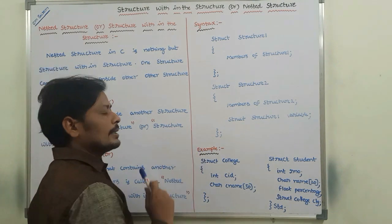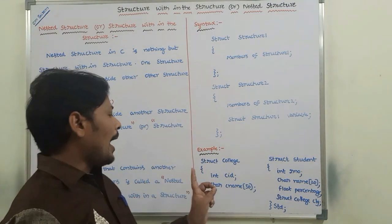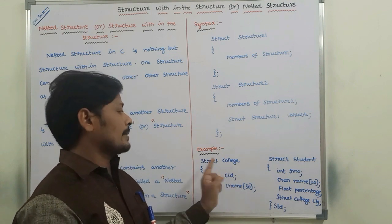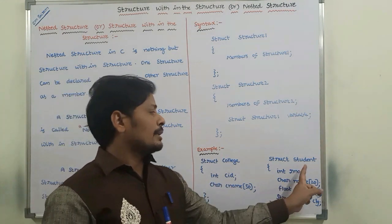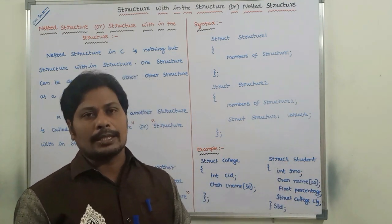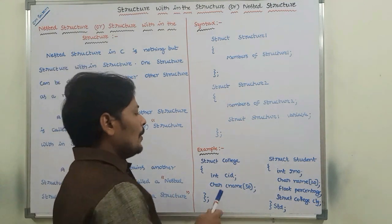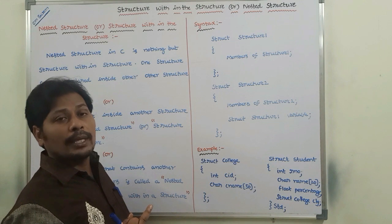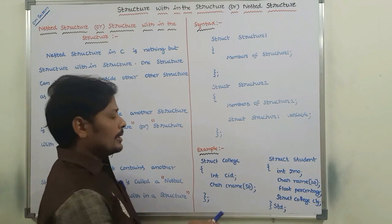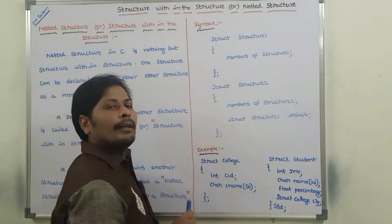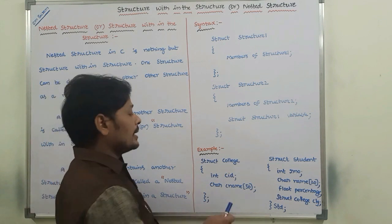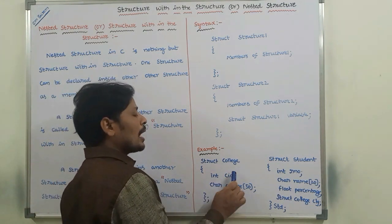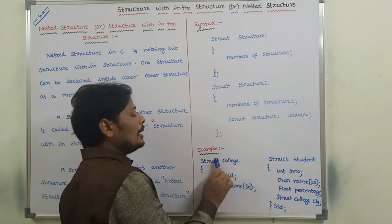Now consider this example. Here I am creating two structures. The first one is the college structure and the second one is the student structure. The college structure contains two data members: college ID, that is CID, and college name, that is CName — these are the two data members in the structure called college.